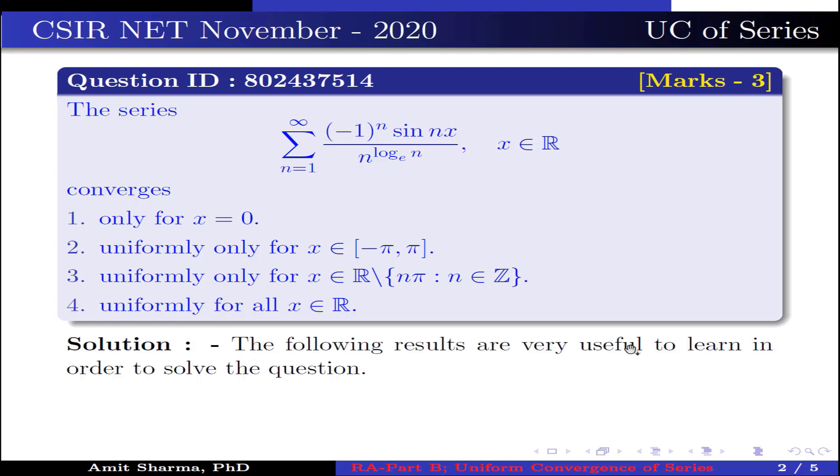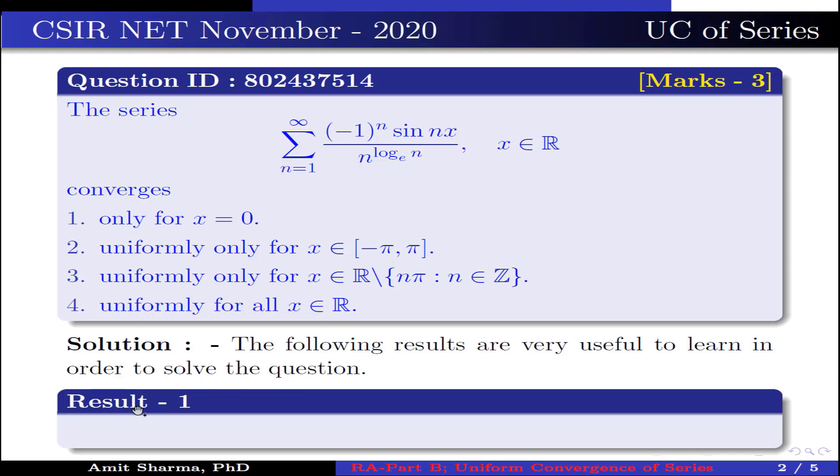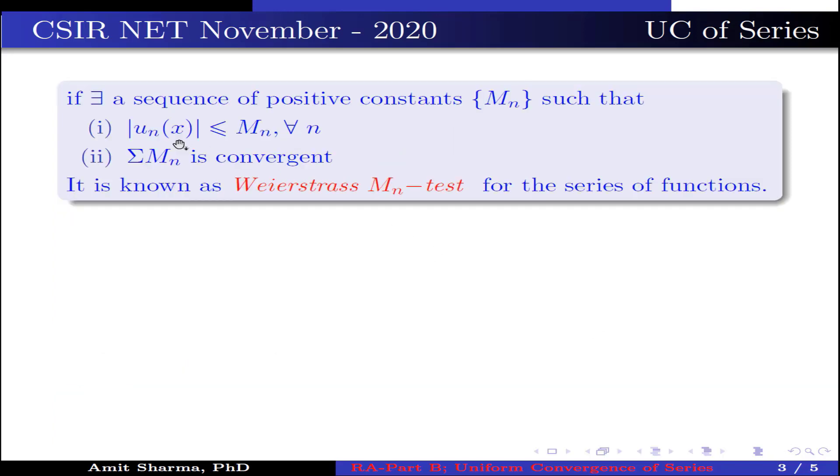The following results are very useful to learn in order to solve the question. Result number 1: The series summation n varies from 1 to infinity u_n(x) defined on interval I is uniformly convergent on interval I if there exists a sequence of positive constants M_n such that: part 1, mod of u_n(x) less than equal to M_n for all n; part 2, series M_n is convergent. It is known as Weierstrass M_n test for the series of functions.